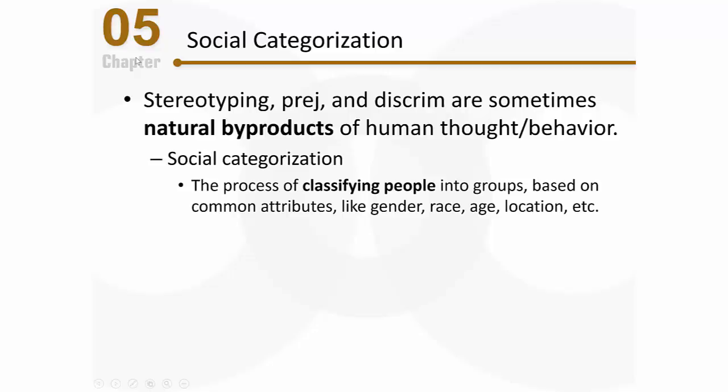Social categorization is simply a process of categorizing or classifying people into groups, and those groups are usually based on some common attribute that the people share. It might be something like gender — we can very easily group people into women and men — or race, age, or location, like where you're from or where you live. It's pretty easy to classify people as northerners or southerners, or even within the same town, maybe you were born on the wrong side of the tracks.